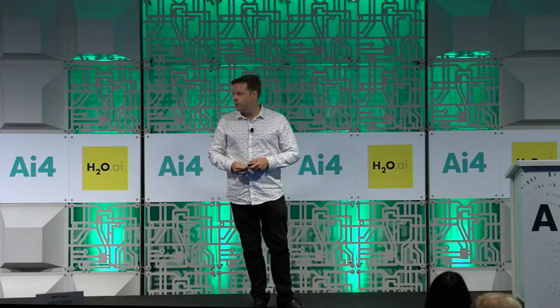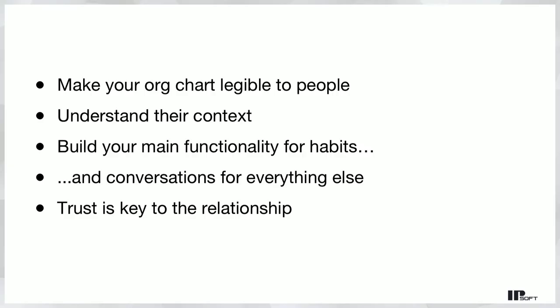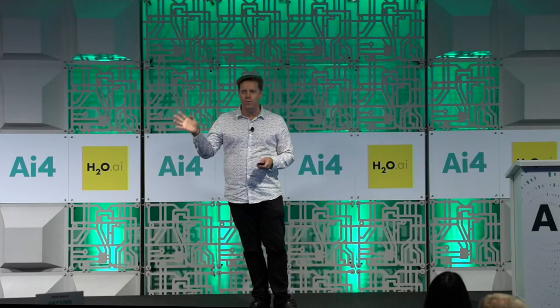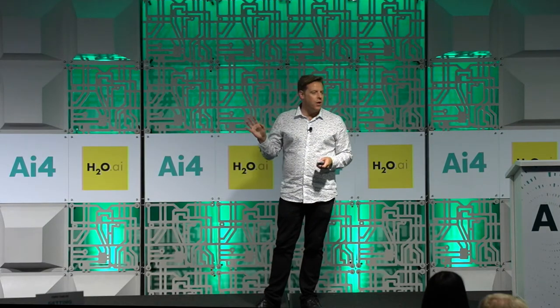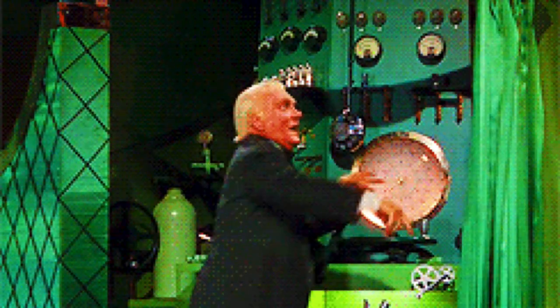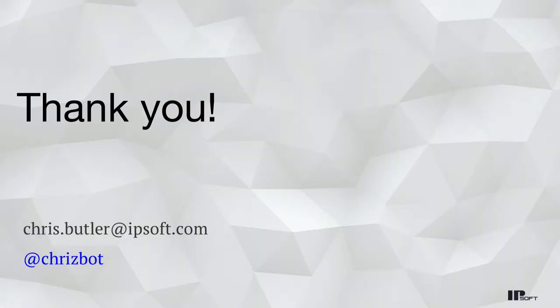In closing: conversational agents should make your org chart more legible to people. You should understand their context. Build your main functionality for habits — the first page of your site should include everything habit-forming or habit-necessary. But for everything else, use a conversation because it makes things much more understandable and interpretable. Trust is really key to building the right type of relationship so people aren't just yelling into the void wanting to talk to an operator. And remember: it's not so much about building systems for human beings to interact with, but these systems are a way to intermediate between human beings. Like the Wizard of Oz — it's a great prototyping approach — but it's always a human behind the curtain. That's always the case.